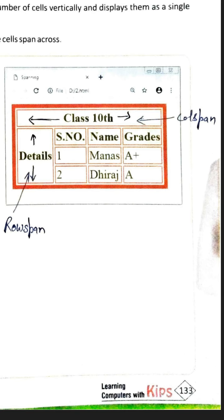In the table, this is known as merging or spanning. The first row has data by spanning four columns. After spanning four columns, one row is created and in that row it is written 'Class 10th'. On the other hand, 'Detail' is written spanning three rows. Spanning means merging or mixing.